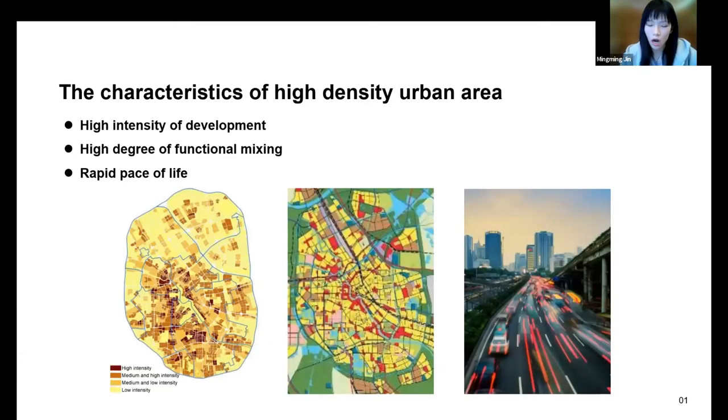COVID-19 spread all over the world, which has a severe impact on urban life. Reducing contact rates and restricting mass gathering are primary prevention strategies to deal with the epidemic spread. High-density urban areas have high intensity of development, high degree of function mixing, and rapid pace of life. They have become hotbeds for the spread of the epidemic.